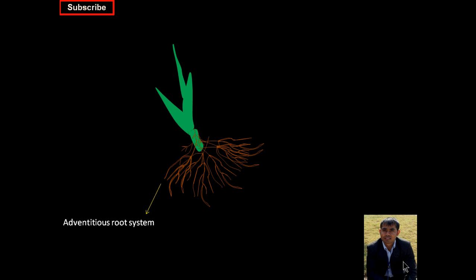From the nodes that are very adjacent to the soil surface, there will be the formation of tillers and tillers will emerge. In the tillers also, primary, secondary, and tertiary leaves will emerge. Rice has the capacity to produce about 40 to 50 tillers per hill.